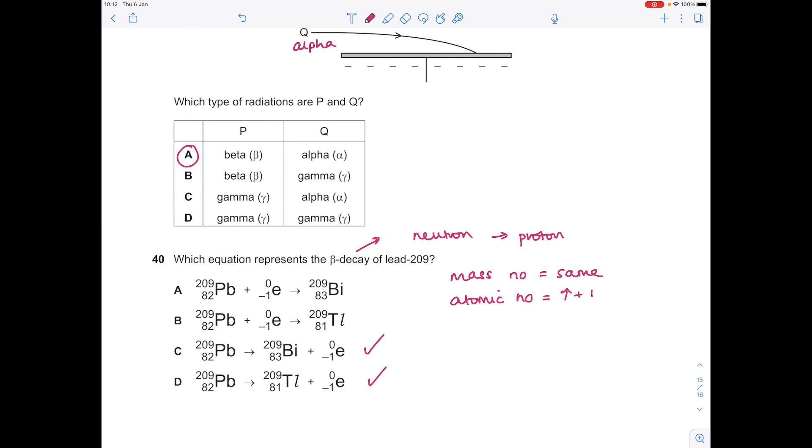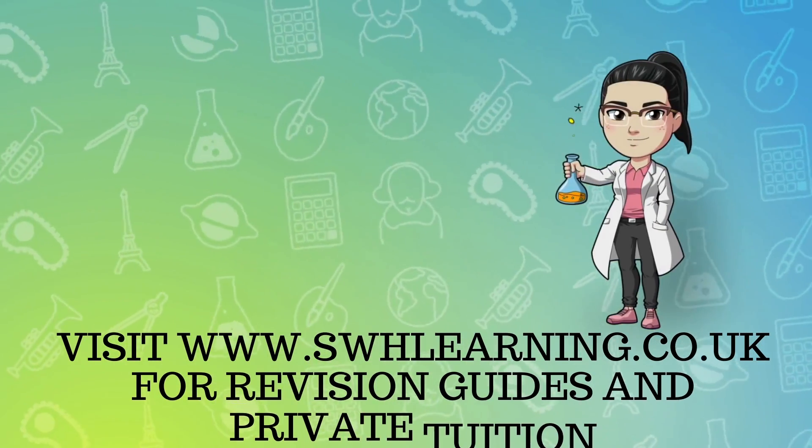We're looking for the electron, the beta particle, to be on the right-hand side of the equation. Let's look for the mass numbers being the same. Yeah, both options are still okay. We need to look for the atomic number going up by one. That's happened here, so the answer is C.